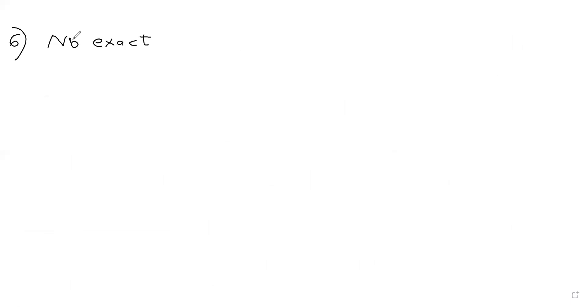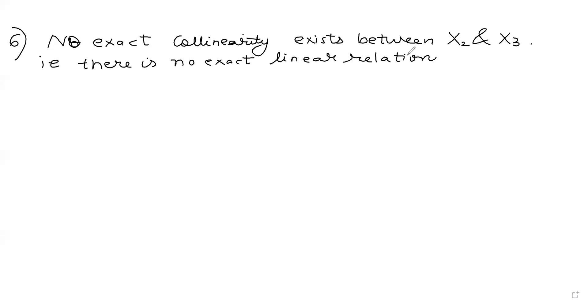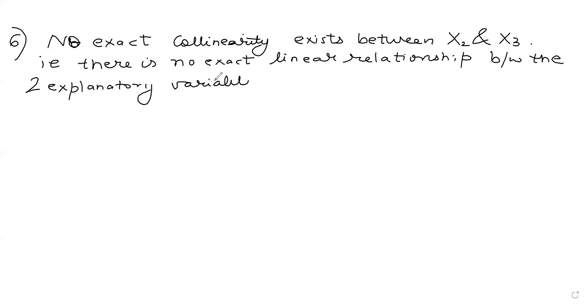Here comes the sixth assumption, which is new in multiple regression: no exact collinearity exists between X2 and X3. There is no exact linear relationship between the two explanatory variables X2 and X3. This assumption is something new in multiple regression.